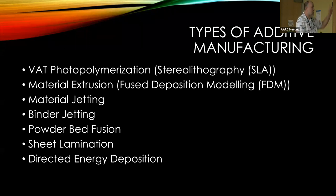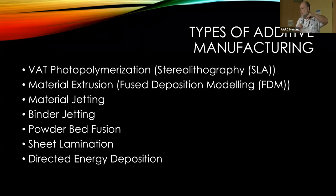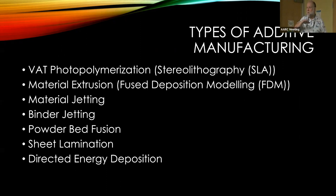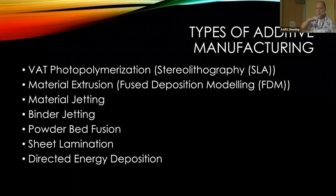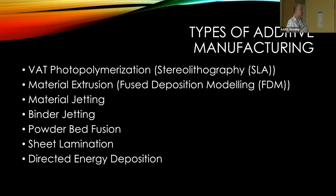In both cases you have some sort of XY control — either scanning a laser in the X and Y axes, or moving the extruder in X and Y. The print bed moves in Z. In FDM the extruder is usually on a gantry. In vat polymerization or stereolithography, the print bed usually moves up and the part turns upside down.